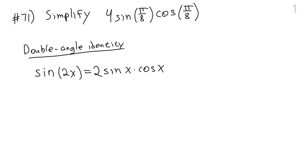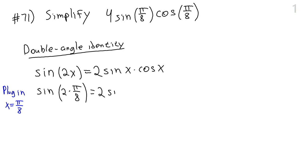Pi over eight is 22.5 degrees — we don't readily know sine or cosine of that angle, and a calculator won't give a nice answer. So we use the double angle identity. Substituting x equals pi over eight, we get: sine of two times pi over eight equals two times sine of pi over eight times cosine of pi over eight, which simplifies to sine of pi over four equals two times sine of pi over eight times cosine of pi over eight.